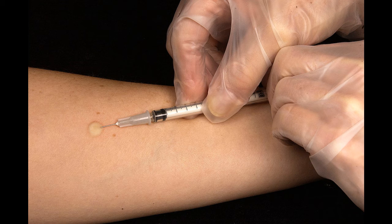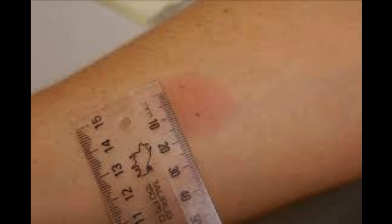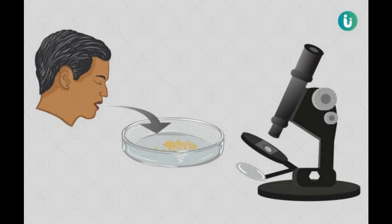For diagnosis, initially we do the Mantoux skin test. In this, tuberculoprotein purified protein derivative is used. An infection is identified as an indurated area of more than 15 mm in 72 hours for an intradermal injection. Smear or culture test of the sputum is done for mycobacterium tuberculosis. Complete blood count is done which shows lymphocytosis and raised ESR.